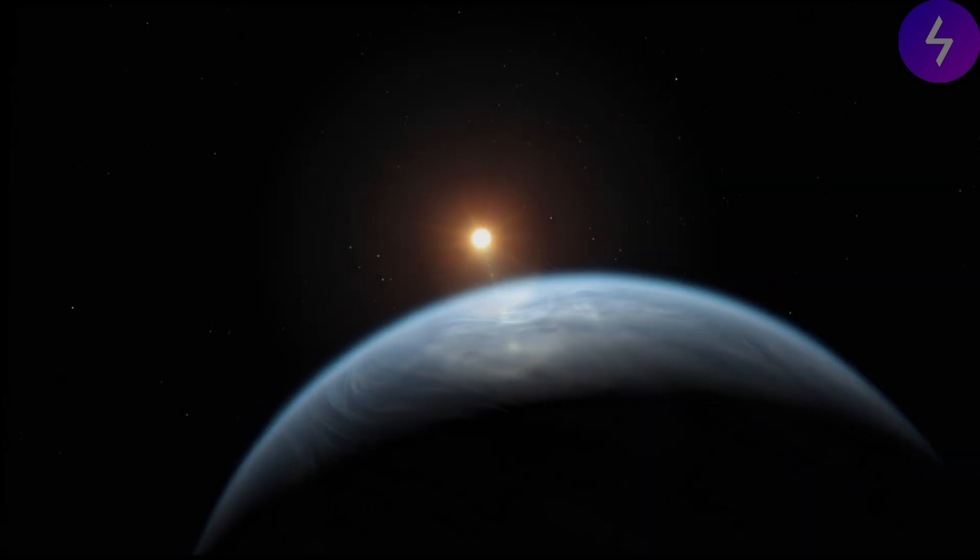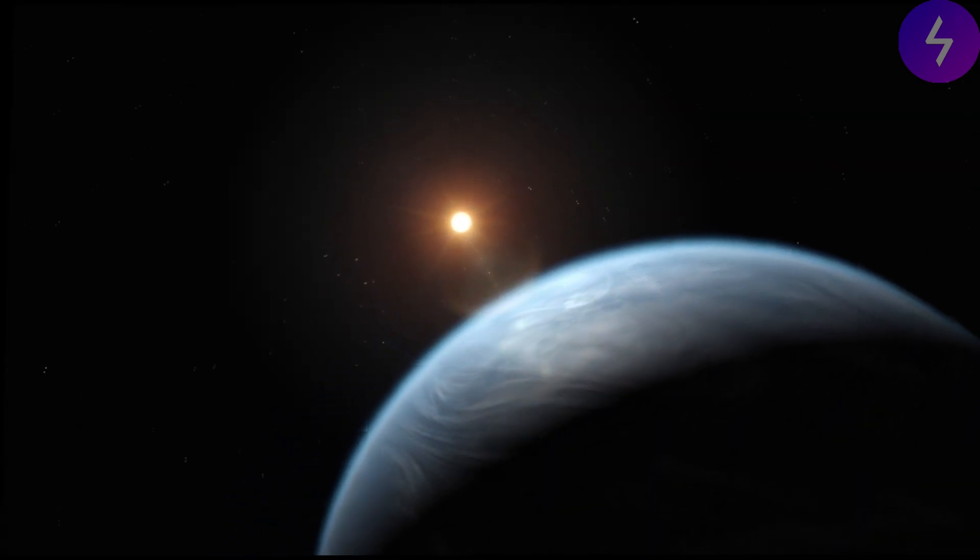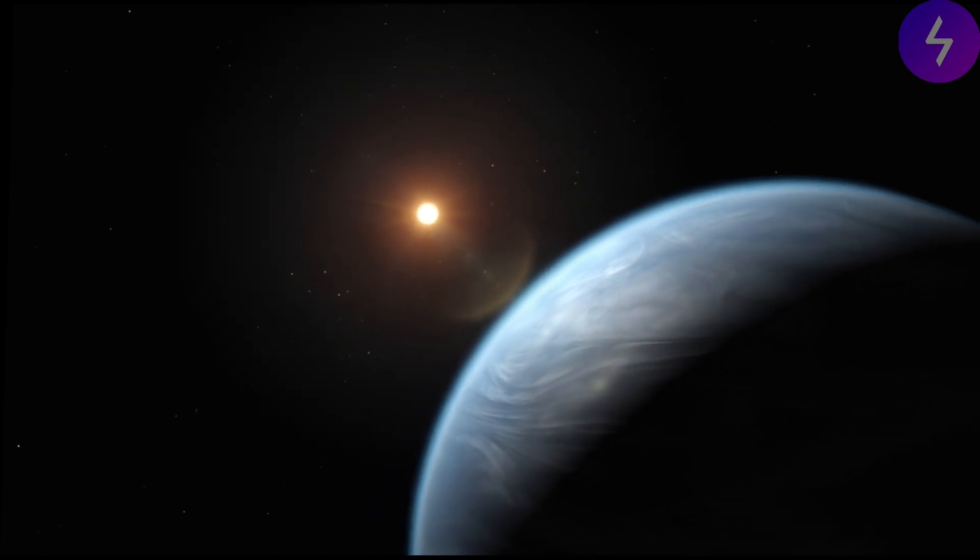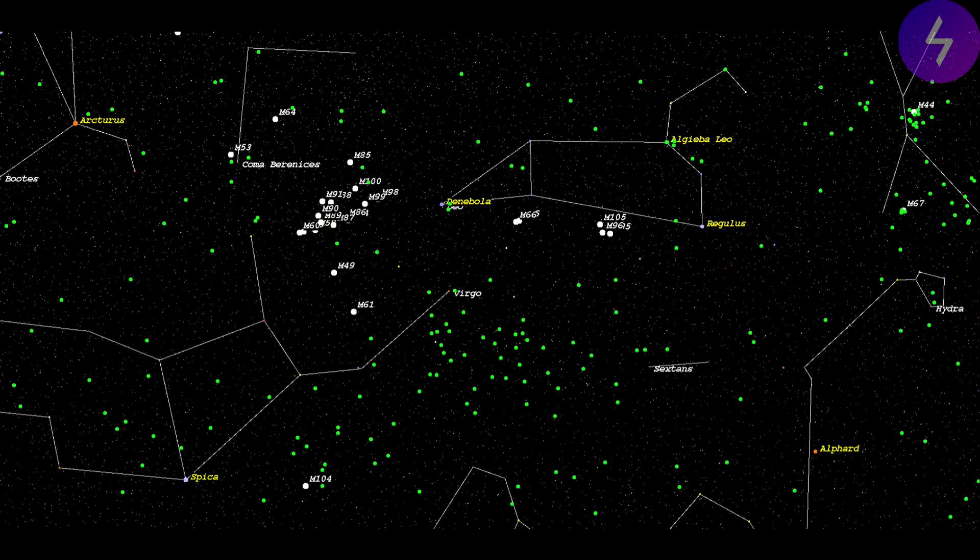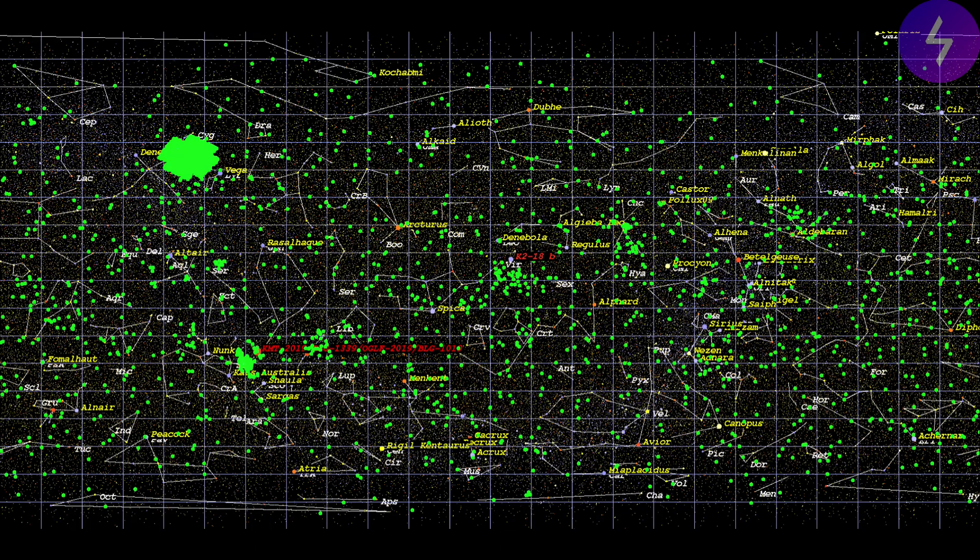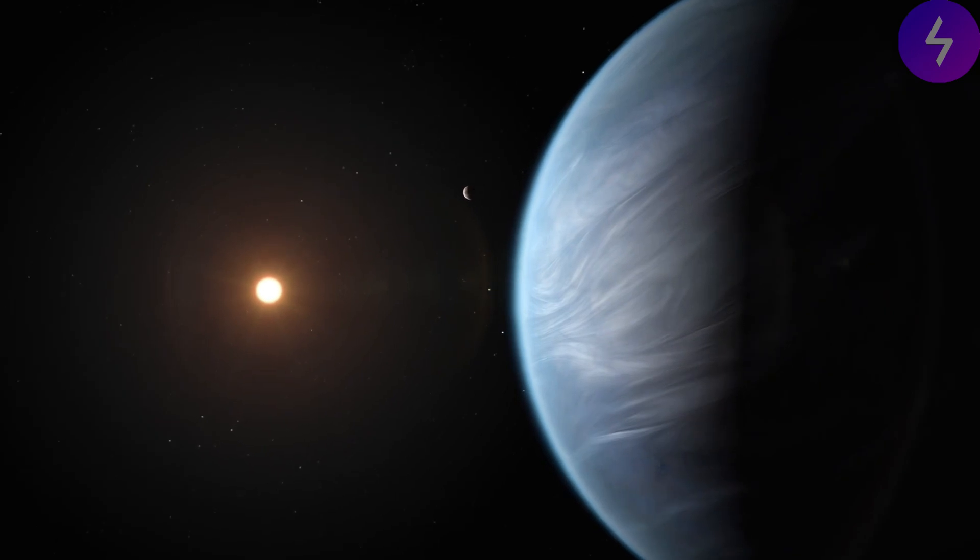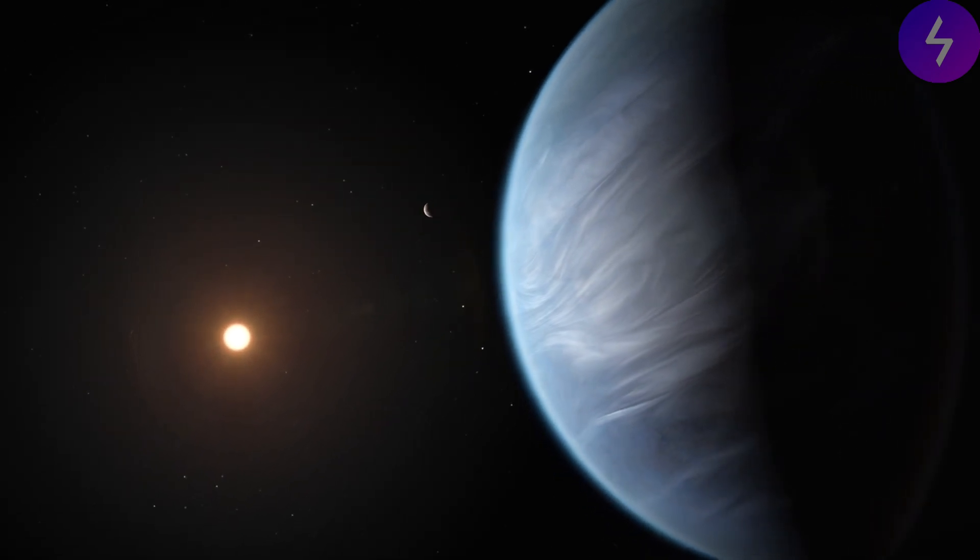In September, the observatory discovered methane and carbon dioxide in the atmosphere of a nearby exoplanet named K2-18b, which circles a cool star 120 light-years from Earth and is larger than our planet but smaller than the giant planets in our solar system. Previous observations with the Hubble Space Telescope had indicated that it hosts thick hydrogen-rich atmospheres with oceans of liquid water underneath. Recent observations with the JWST support that hypothesis, as the new data shows evidence for abundant methane and carbon dioxide but little ammonia.